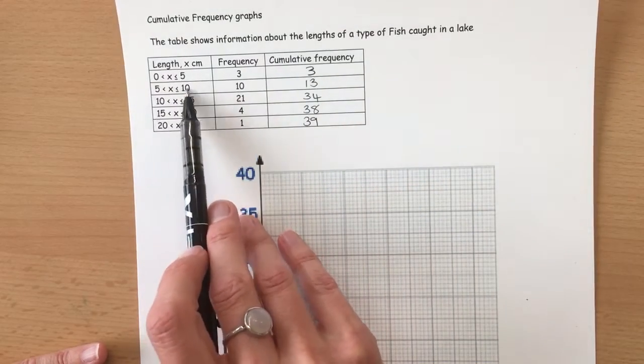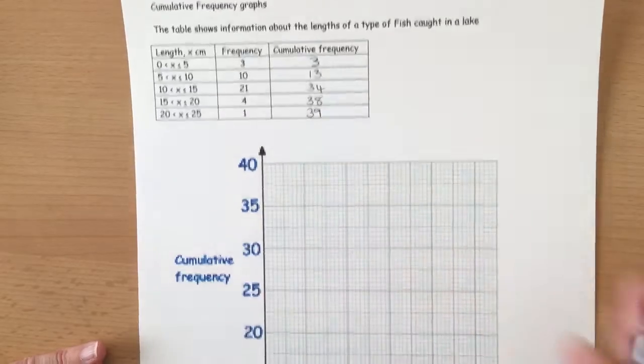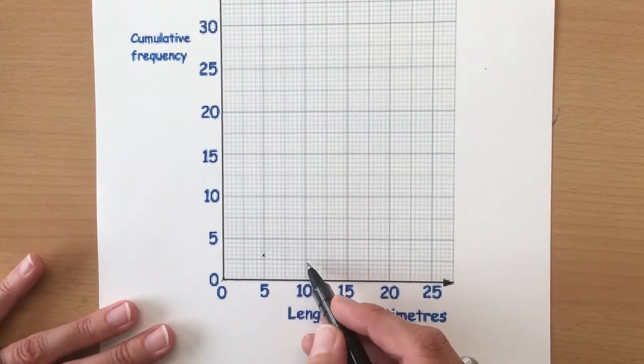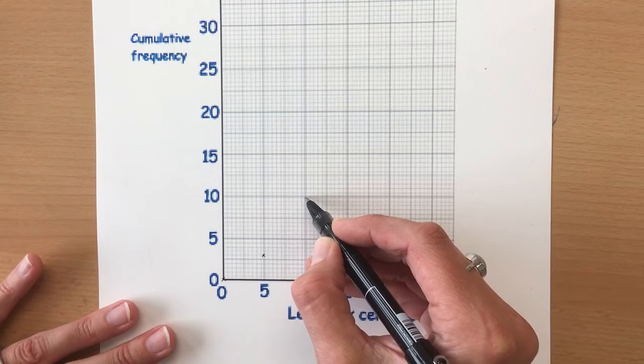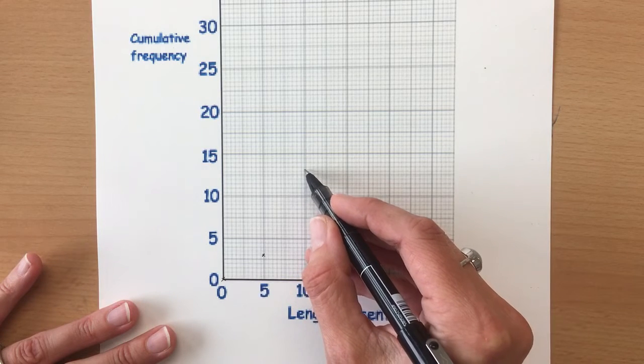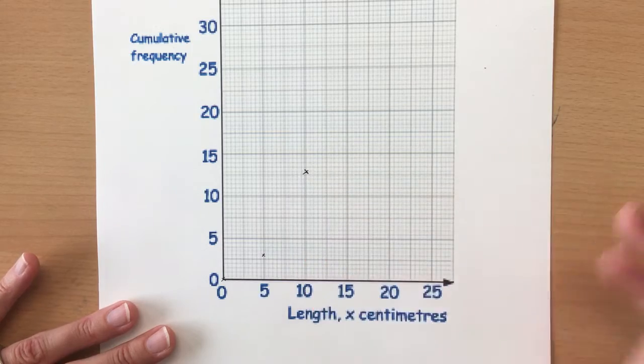Now the second row, between 5 and 10, has now gone to 13. So between 5 and 10 we need to now move up to 13. This is 10 then 11, 12, 13 and we put a mark down.